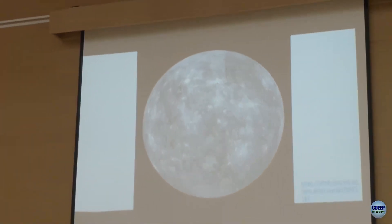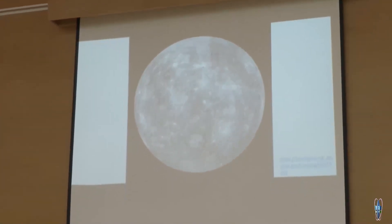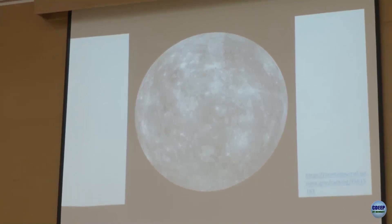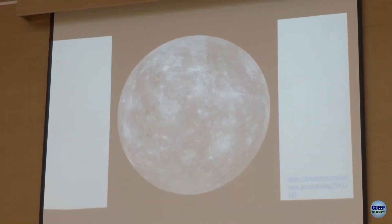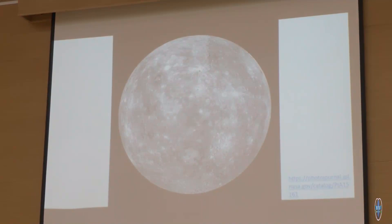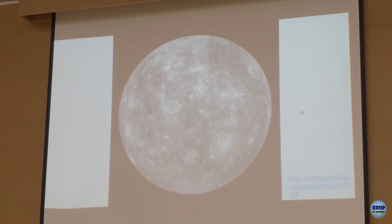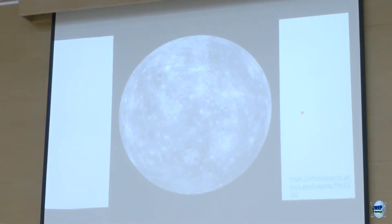This is the image of Mercury — it looks very similar to the Moon. They have similar impact structures, similar geological structures, and neither has any atmosphere. One difference is that Mercury looks very similar on both sides, whereas the Moon's near side is very different from its far side.